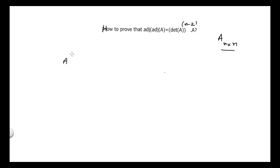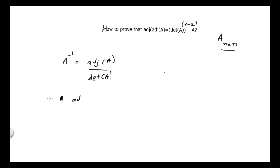We can start our proof from the very basic formula used to find the inverse of any given square matrix. We can write A inverse is equal to adjoint of matrix A divided by determinant of A. Rearranging, adjoint of A is equal to determinant of A times A inverse.